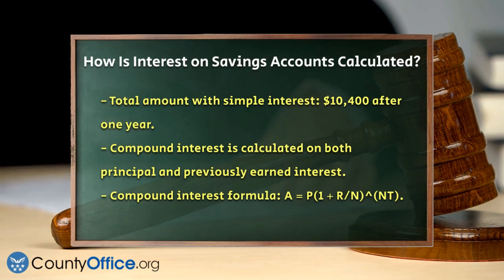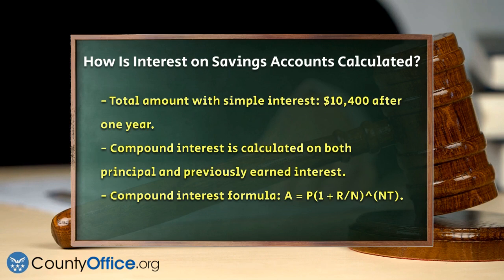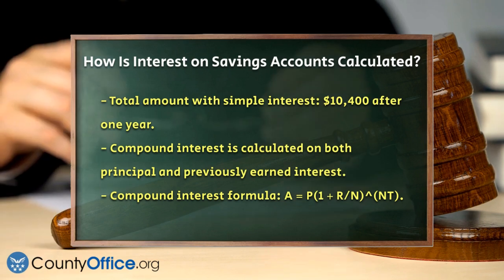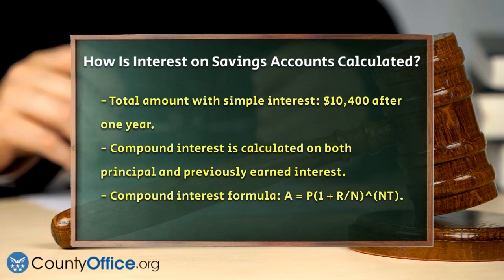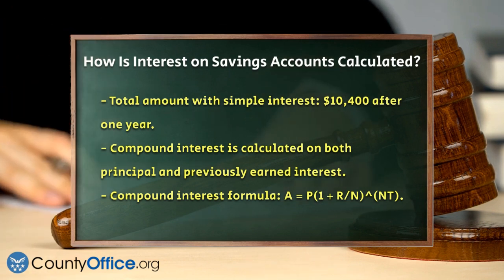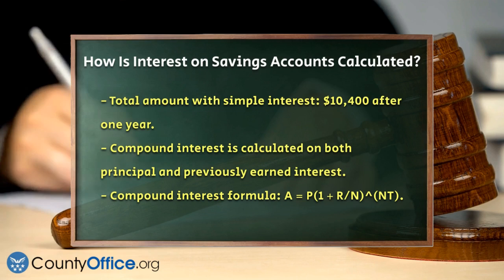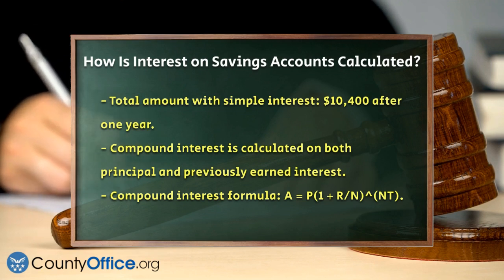The formula for compound interest is A = P(1 + r/n)^(nt), where A is the ending amount, P is the principal amount, r is the interest rate as a decimal, n is the number of times interest is compounded per year, and t is the time in years.